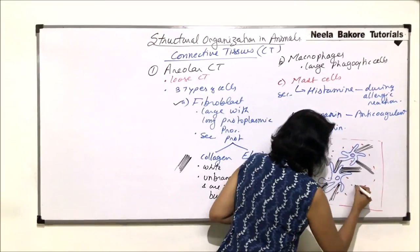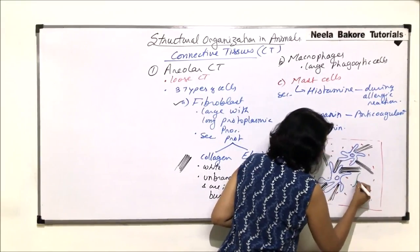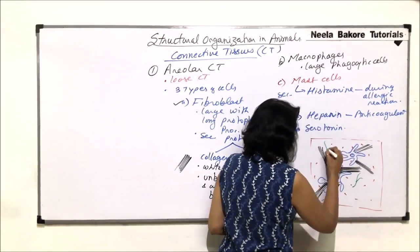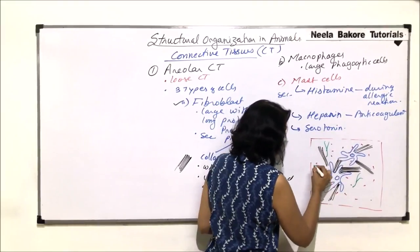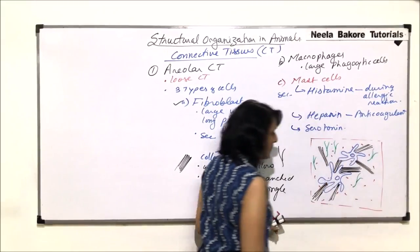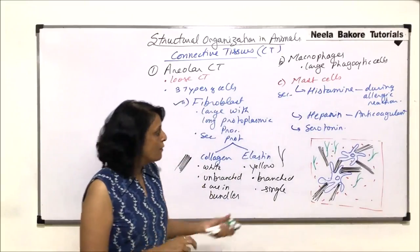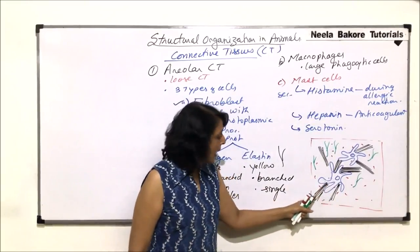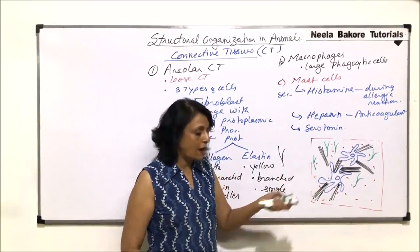And now let us draw a few elastin fibers. Elastin fibers are branched and single. Collagen is unbranched and in bundle. So these are the elastin fibers. So we have drawn fibroblasts and the fibers which are secreted by fibroblasts.